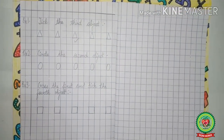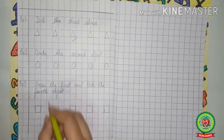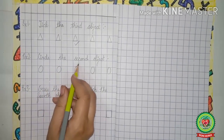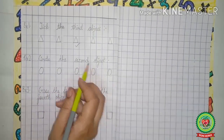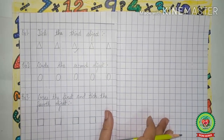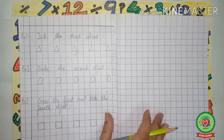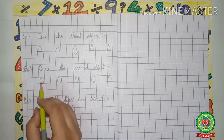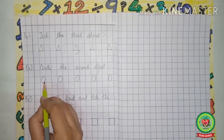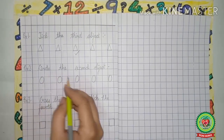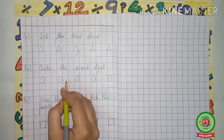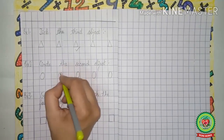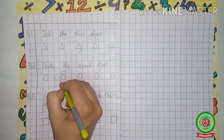Now let us read another exercise: circle the second object. Again we will count the objects and circle the second one. First, second — this is the second object, so we will circle it.